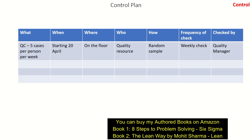After implementing the solutions we need to provide a control mechanism to the process. The control mechanism here is that we will audit 5 QC cases per person per week, starting from April, on the floor, done by the quality resource using random sampling. This quality resource also needs to be monitored by a quality manager every week — the manager will check whether the quality resource is performing this activity daily, and if not, feedback will be given and it will be enforced. If this control is not there, quality will again go back.